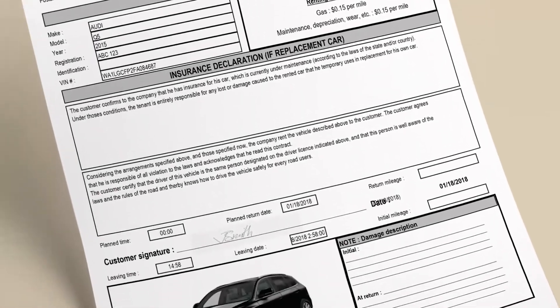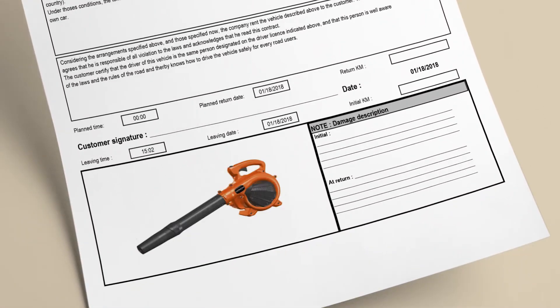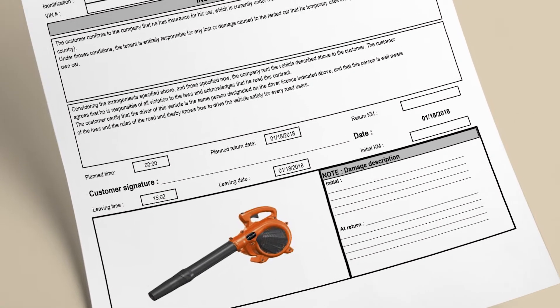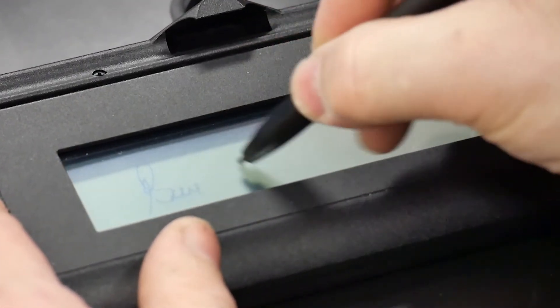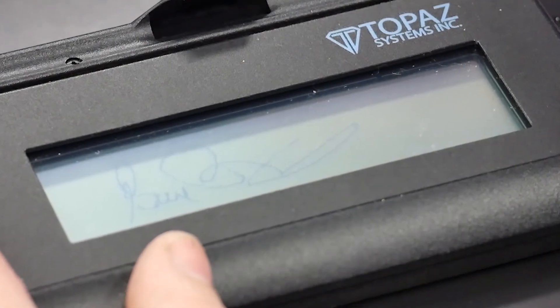Personalize the rental agreement to adjust the text and picture. You are renting equipment? Adapt your agreement in seconds. Go paperless and protect yourself by using the electronic signature pad.